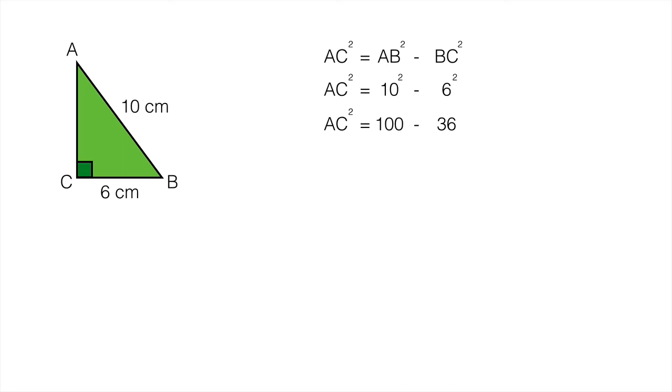So 100 minus 36 gives me AC² equal to 64. Now at this stage I need to find the square root and AC will be the square root of 64. And the square root of 64 is 8. So AC is 8 centimeters.